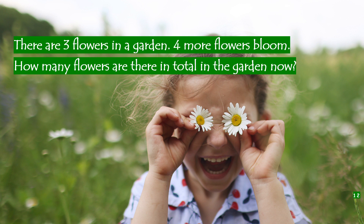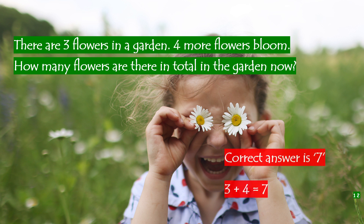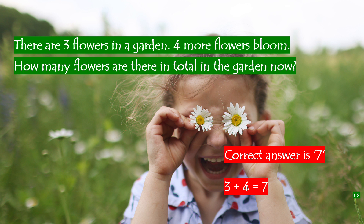There are 3 flowers in the garden. 4 more flowers bloom. How many flowers are there in total in the garden now? The correct answer is 7. 3 plus 4 is 7.